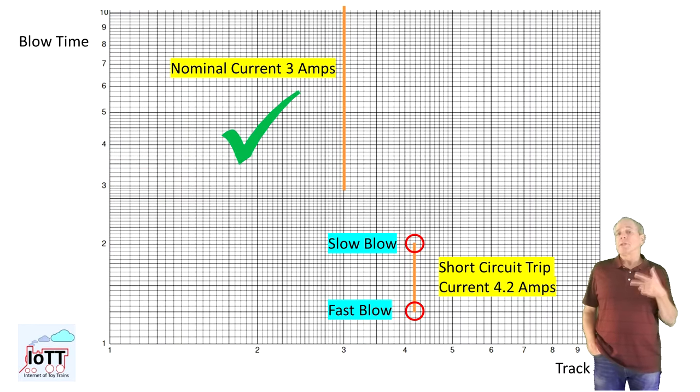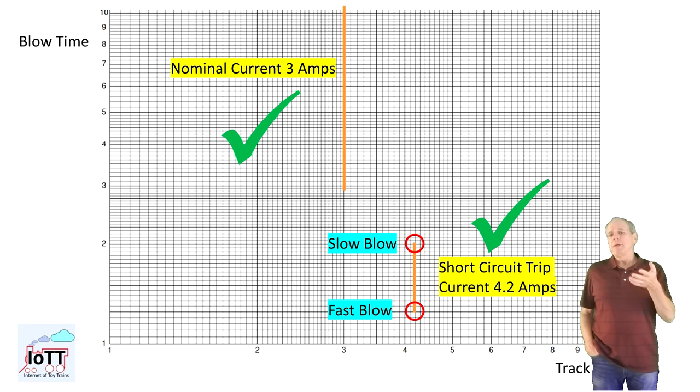Going back to the TI diagram, we now have covered the range below nominal current, which can be sustained forever, and the range above the short circuit trip current, which leads to a programmable immediate shutdown, possibly only after first trying to reverse the polarity and test if the short circuit remains.